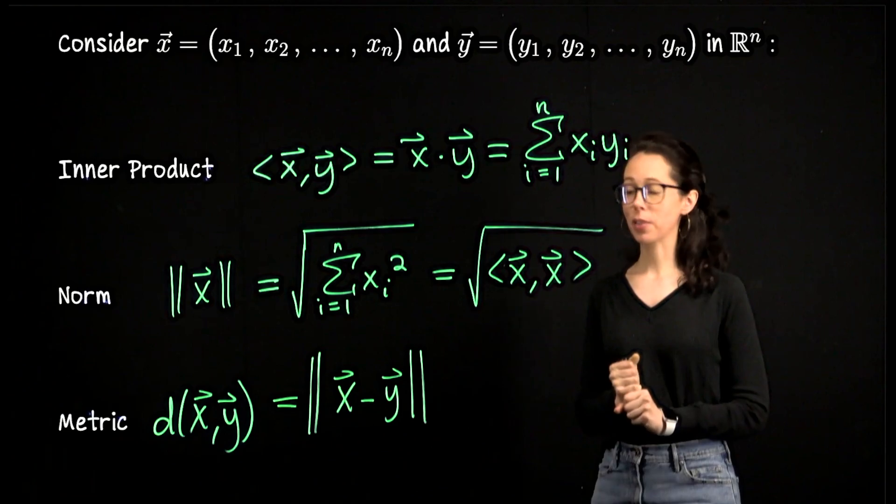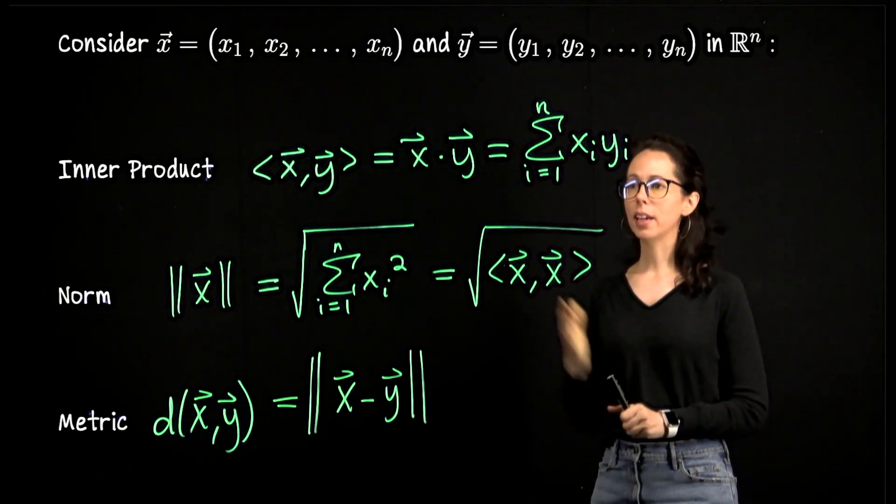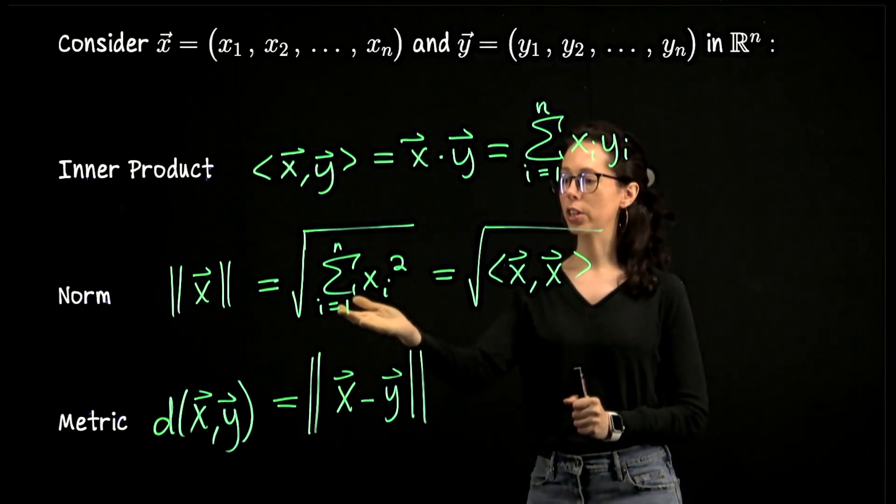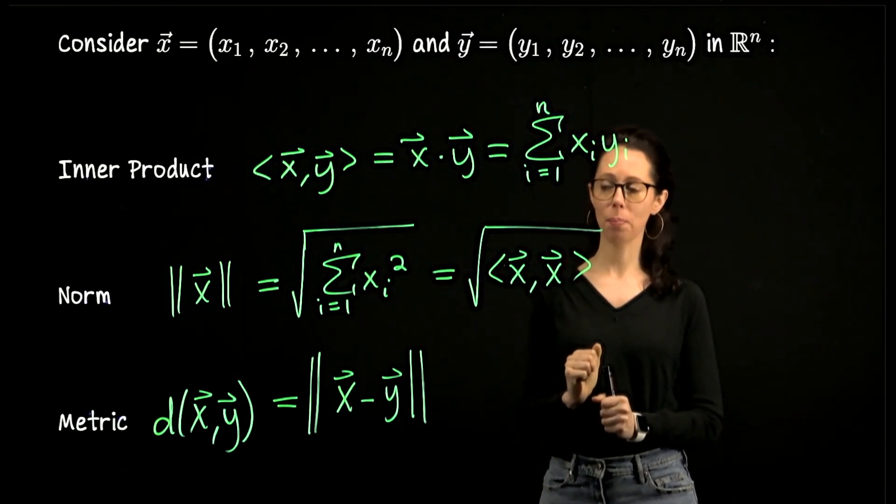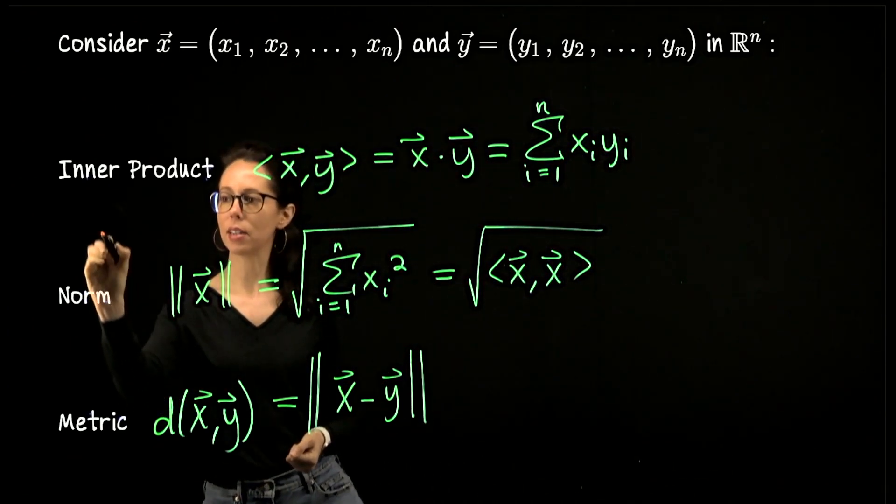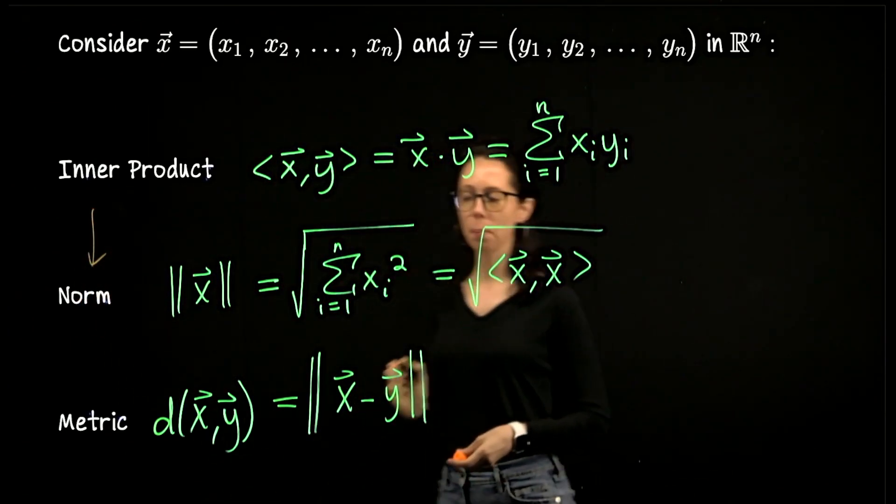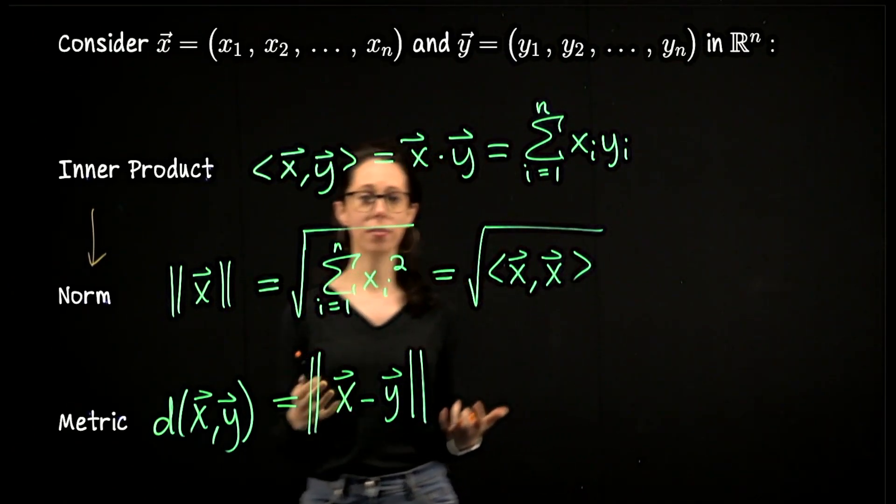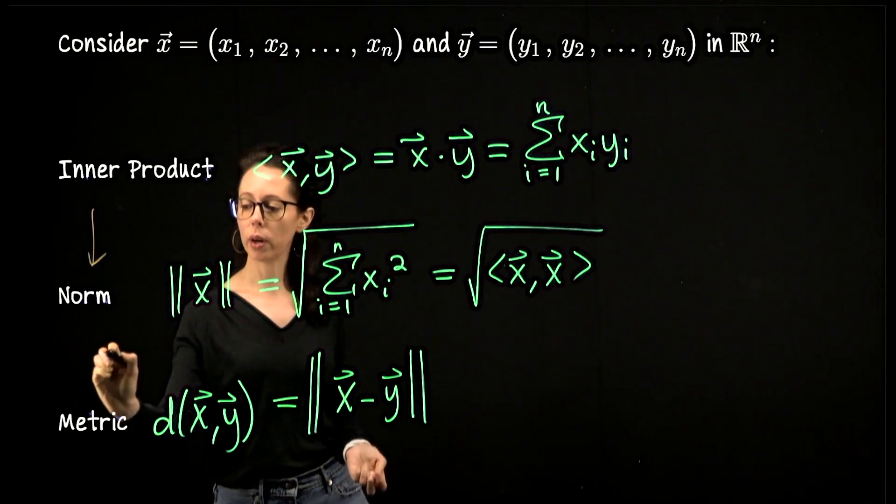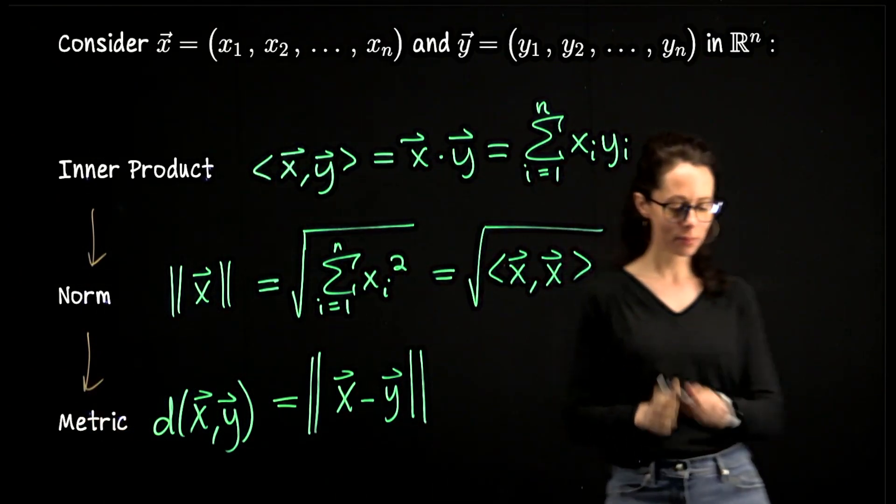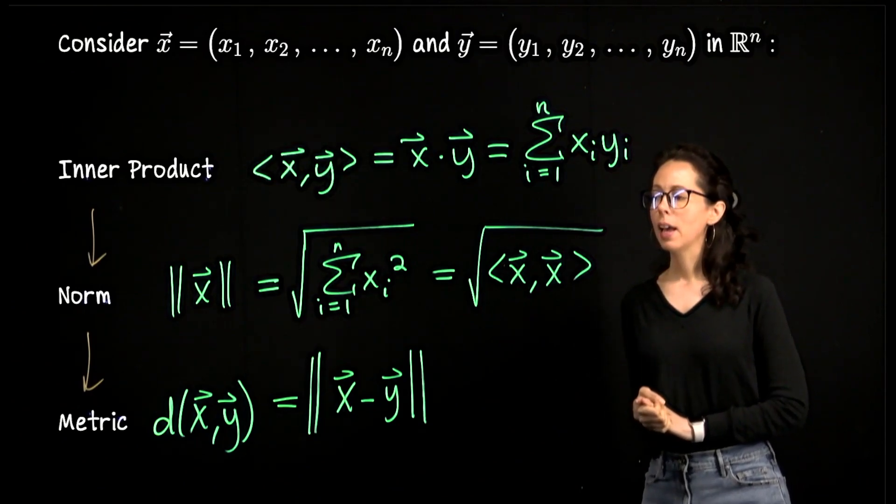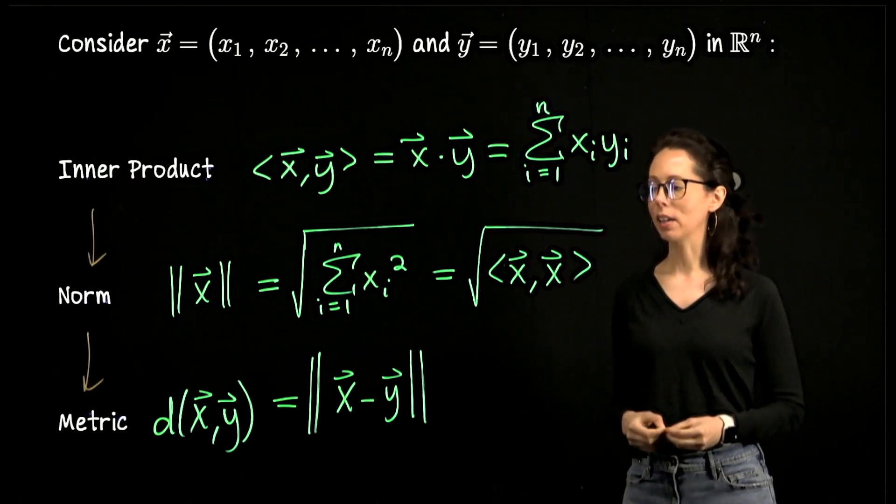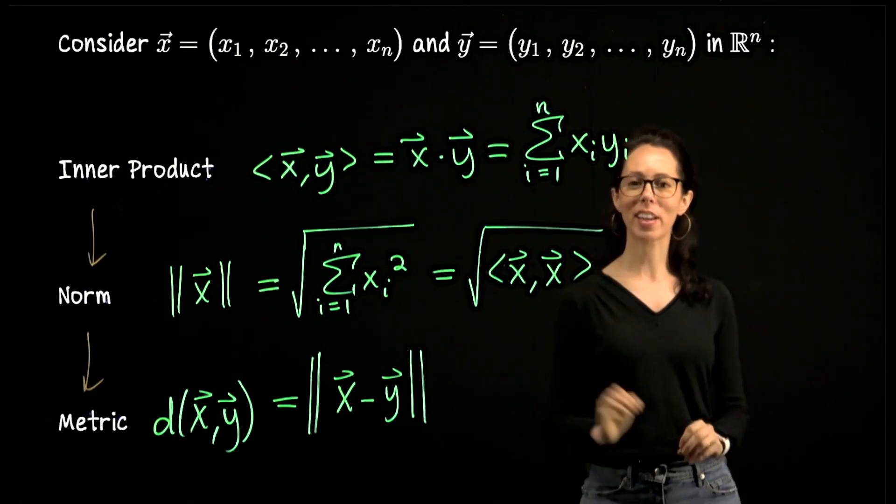So let's make some observations. The inner product was a computation that we defined. With that, we created this notion of the Euclidean norm. So we can say that the Euclidean inner product induces the Euclidean norm. And then similarly, the norm led directly into our definition of Euclidean metric. So the Euclidean norm induces the Euclidean metric. That's the first observation. The next one I want to make is that all three of these give us some geometric meaning in R^n. I already revealed that for metric, it's distance. So we're measuring the distance from x to y.